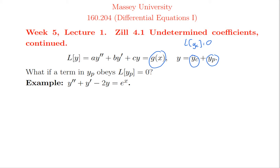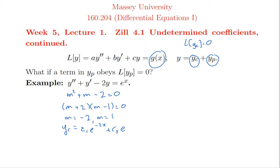The equation is y'' + y' - 2y = e^x. First we find the homogeneous solution. The indicial equation is m² + m - 2 = 0, which factors as (m+2)(m-1) = 0. The roots are m = -2 and m = 1. So the complementary solution is c₁e^(-2x) + c₂e^x.